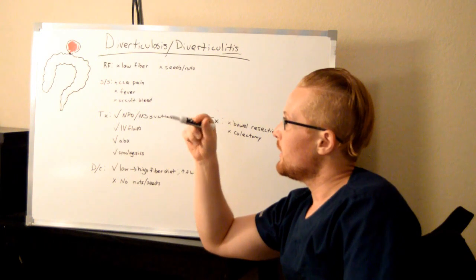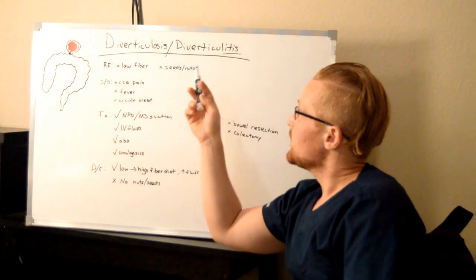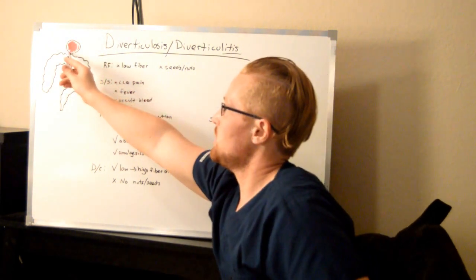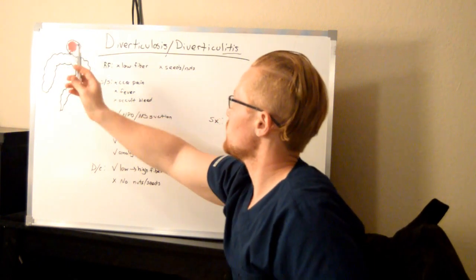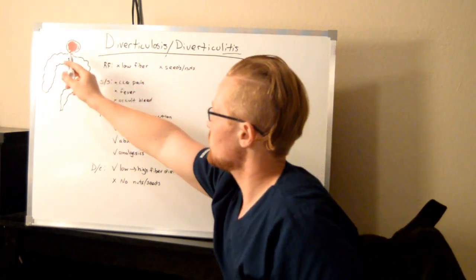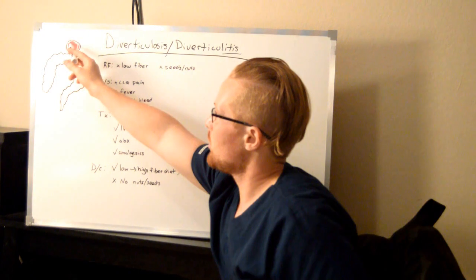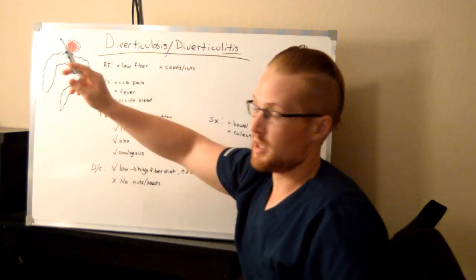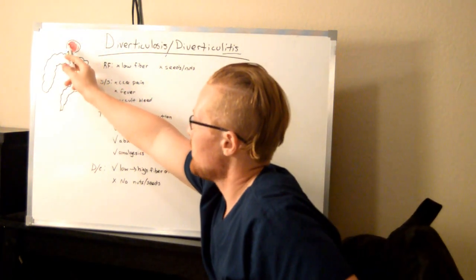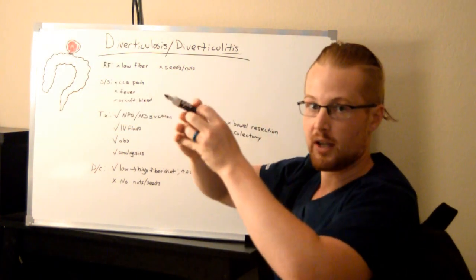Diverticulitis is when this herniation gets clogged here, such as the seeds or nuts or some other source, and the stool that's in here gets infected. What happens is it just starts getting inflamed and swollen and growing, causing lots of pain.